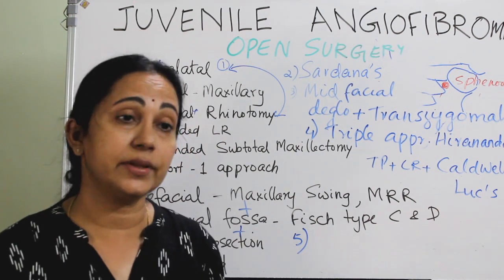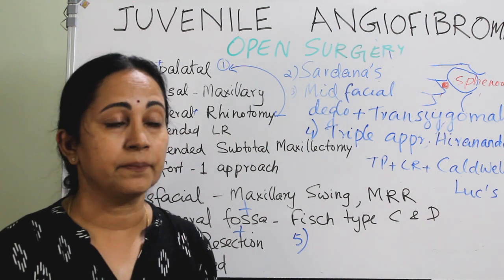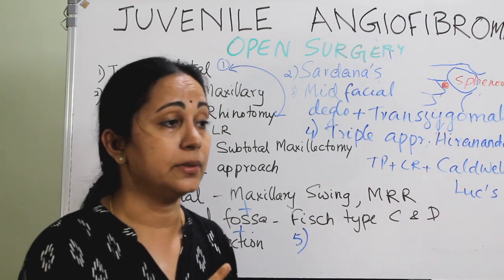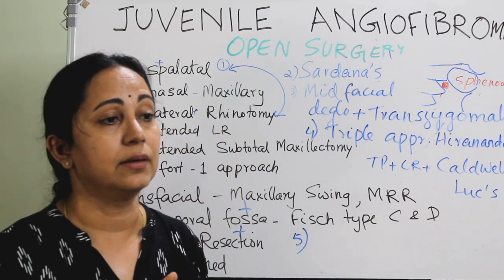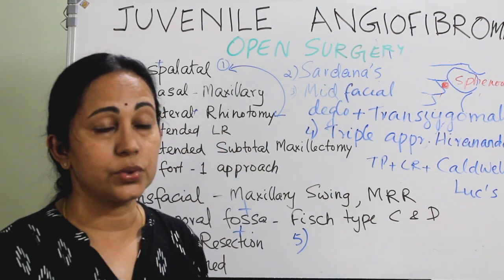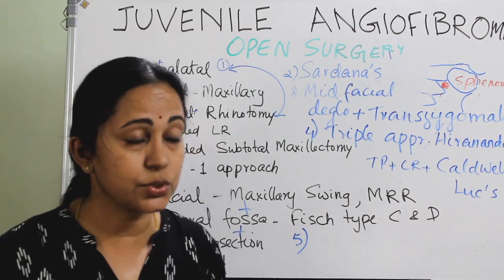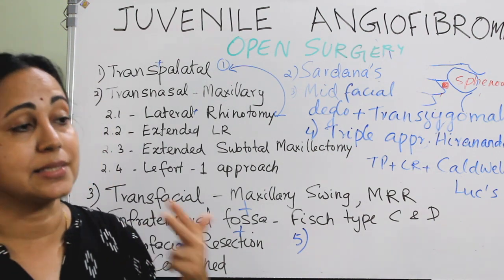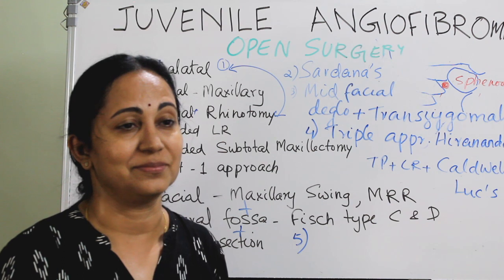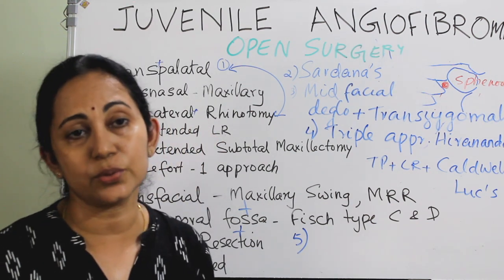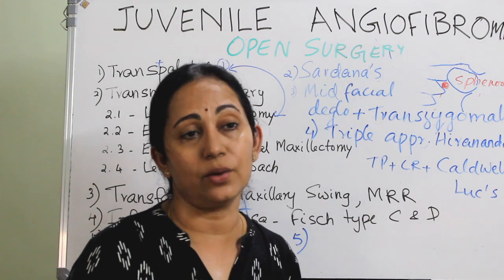We have now discussed everything about JNA across various parts — starting from the theories of origin, then the origin and spread of JNA, clinical features, histopathology, investigations of choice, staging, and different types of treatment modalities. Go through all these videos, study, and ask if you have any doubts regarding these chapters.